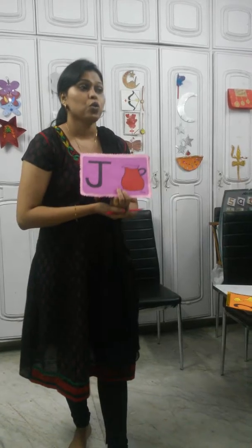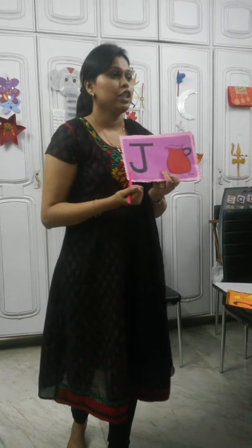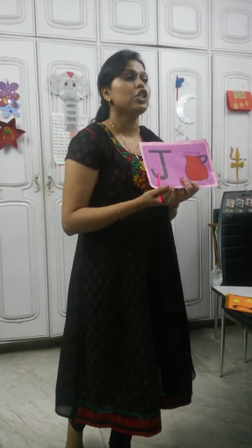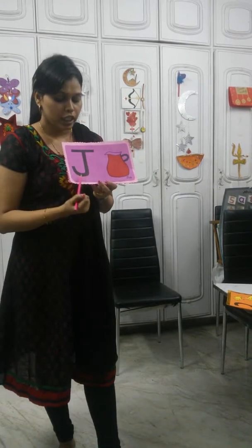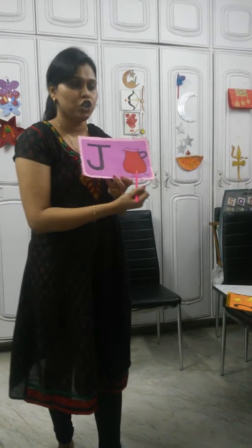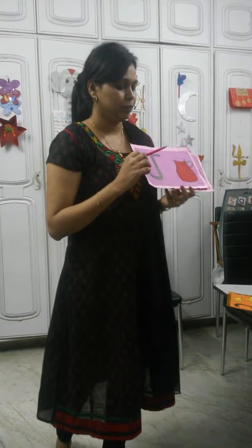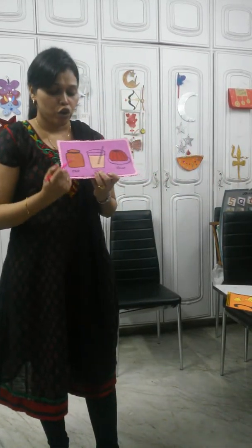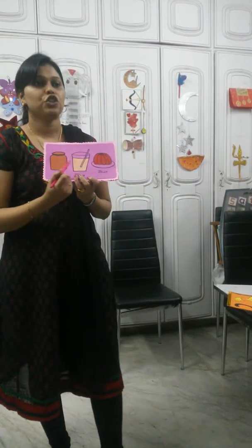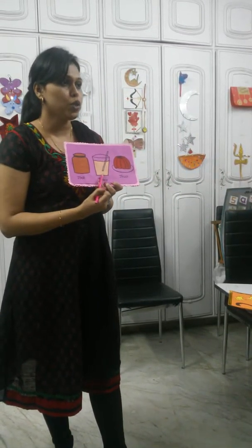Now, as you know, every letter has a sound. The sound of letter G is J. Now let's see a few things that begin with letter G: J for char, J for juice, and J for jelly.